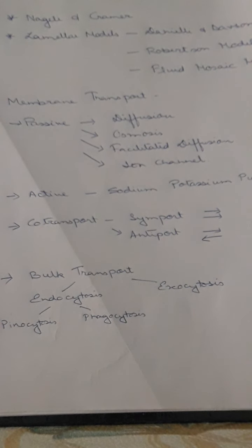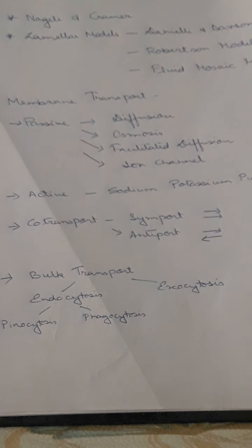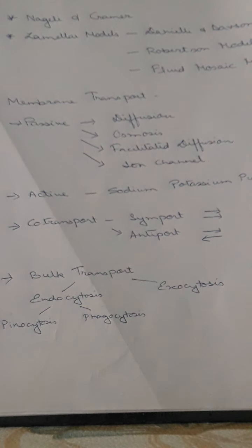These are the main processes of membrane transport by which particles can get inside or come outside the cell. The structure of the cell membrane — especially the fluid mosaic model — and the membrane transport processes are all important. Go through the notes and videos carefully, and if you find any problem please let me know.